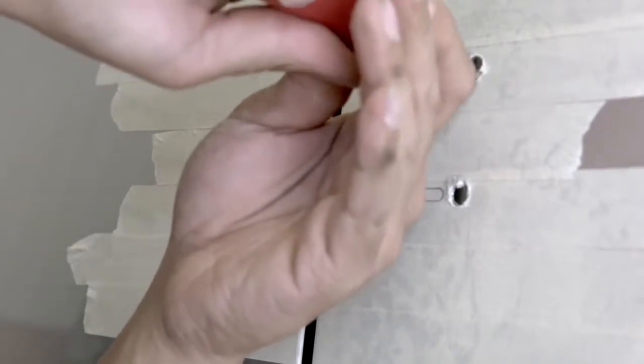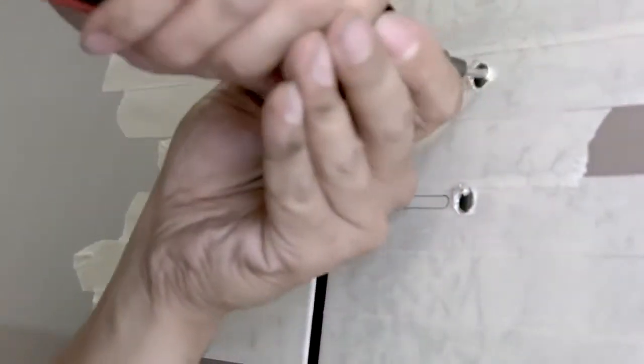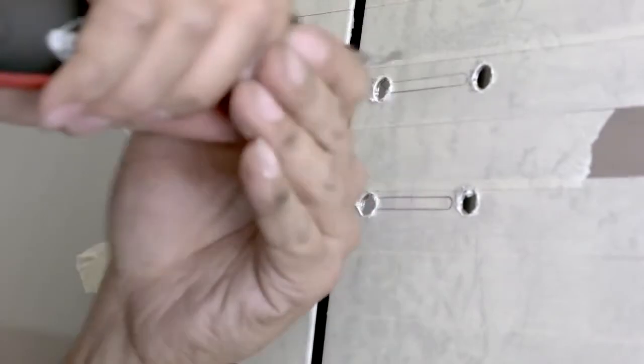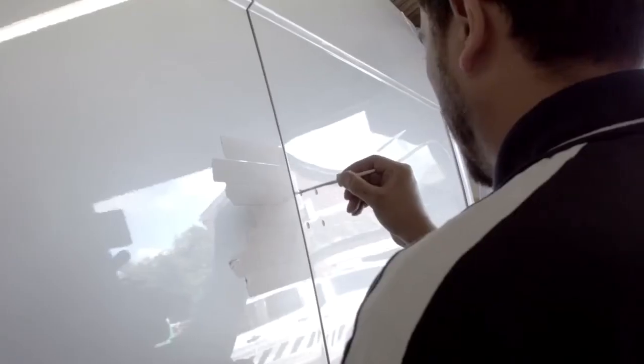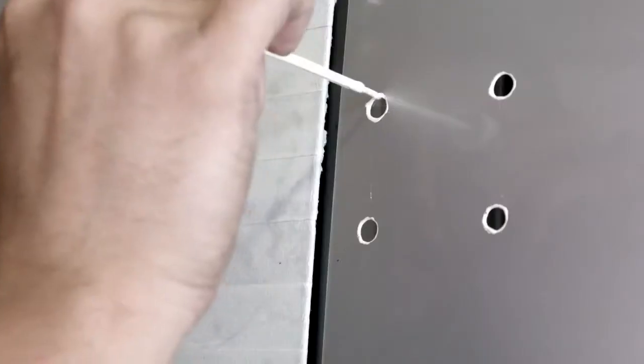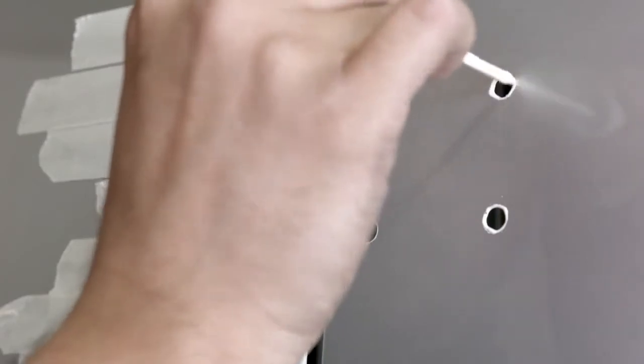It's important to ensure that all the holes are free from filings and debris. To do this, we'll use the deburring tool. Once the filings and debris is removed, we can now remove the masking tape from this side panel. It's important to treat the bare metal with a suitable protective coating. We will use an automotive touch-up paint stick and allow it to cure.